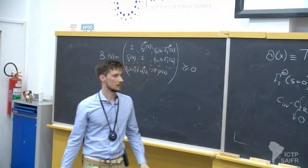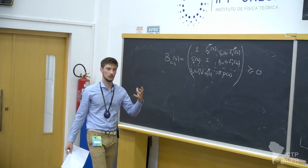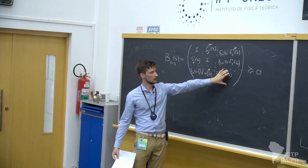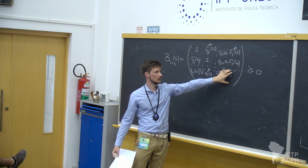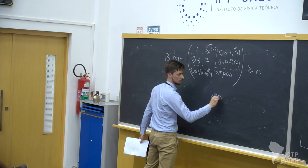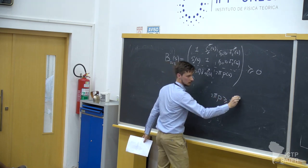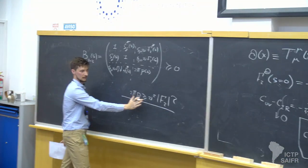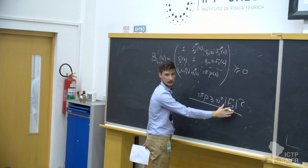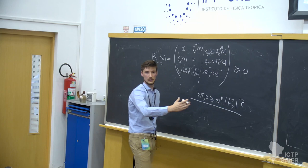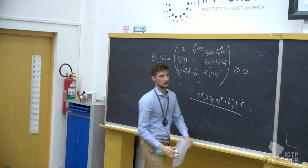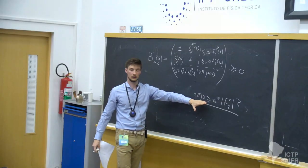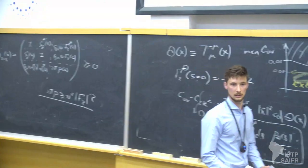We have a working hypothesis for why this is the case, related to how the numerical algorithm works. Basically, the algorithm tries to saturate the bound 2pi rho — the spectral density — as being given only by the two-particle state contribution, excluding three, four, et cetera particle states. However, those higher-particle states probably give an important contribution. So the central charge we get is just the contribution from the two-particle state.